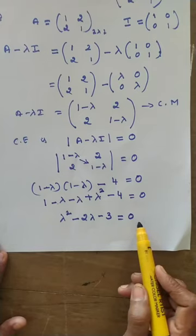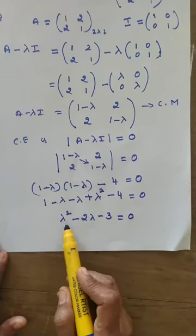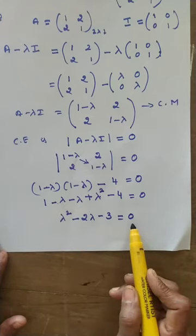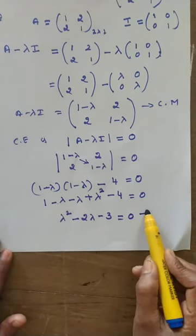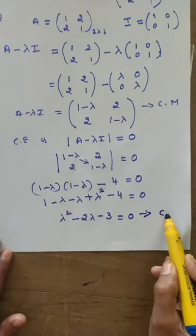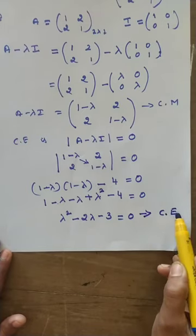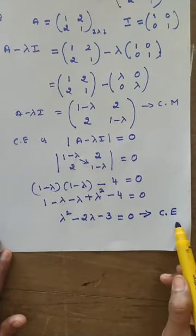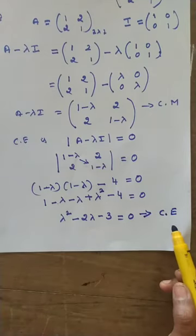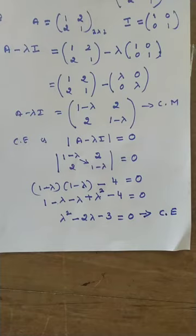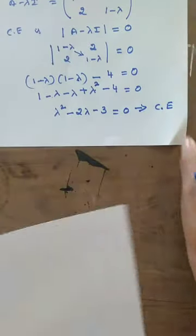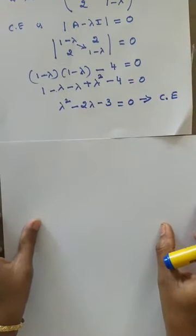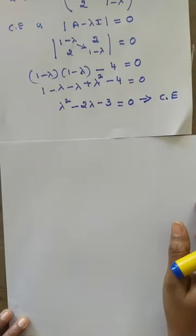This equation, lambda squared minus 2 lambda minus 3 equals zero, is the characteristic equation. Solve it using the factorization method. Split the middle term minus 2 lambda into two terms.